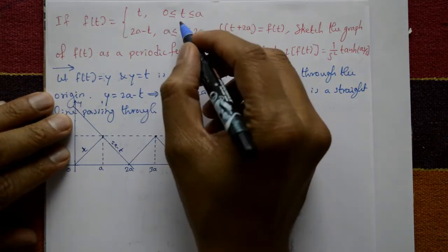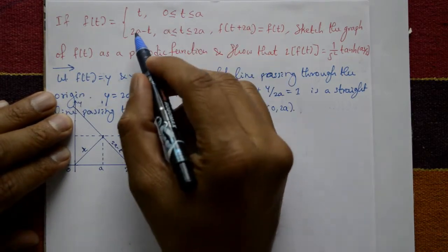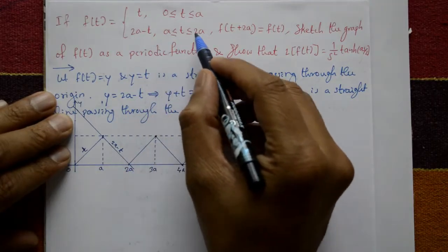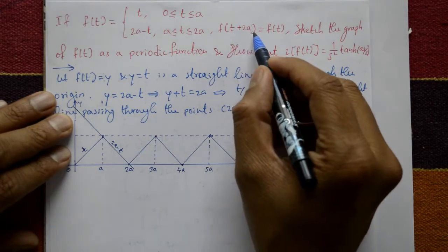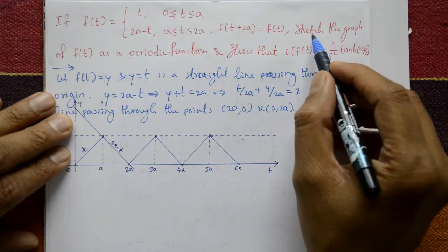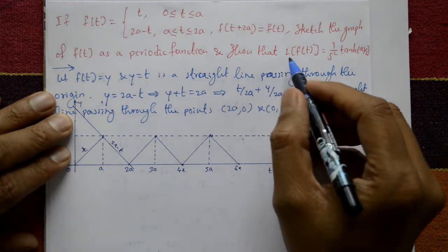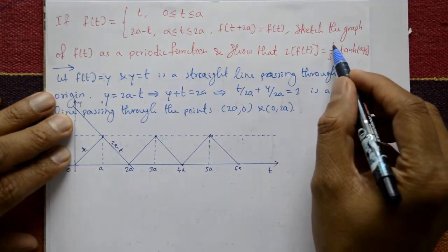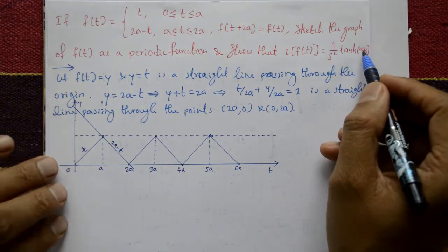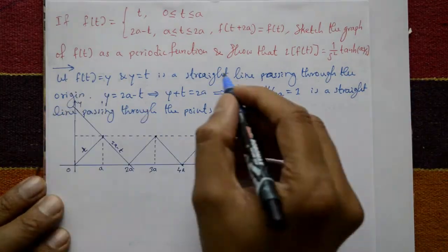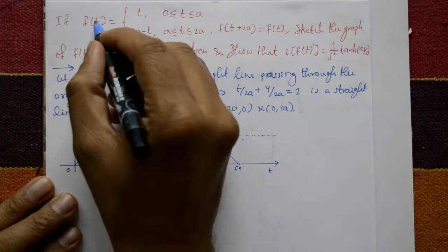If f(t) is equal to a discontinuous function: t for 0 to a, and 2a minus t for a to 2a, and f(t + 2a) = f(t), sketch the graph of f(t) as a periodic function and show that the Laplace of f(t) is equal to (1/a²) tanh(as/2).